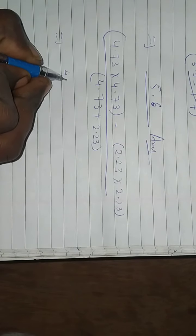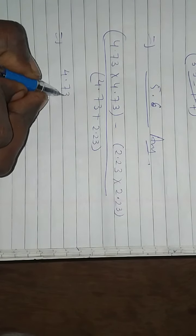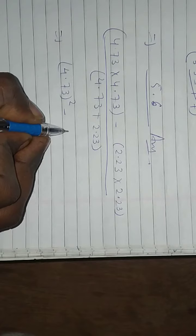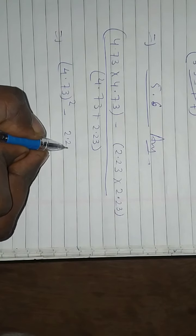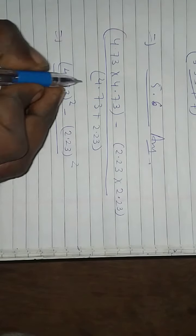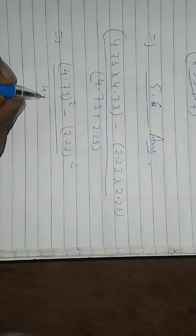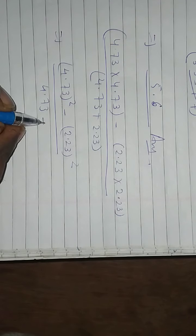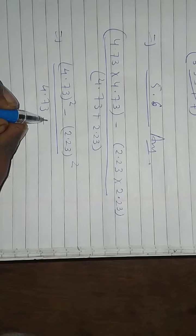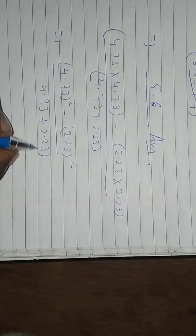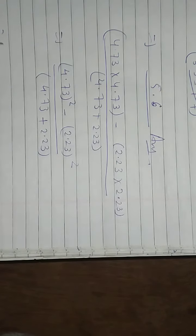We can write this as 4.73 whole square minus 2.23 whole square, over 4.73 plus 2.23.